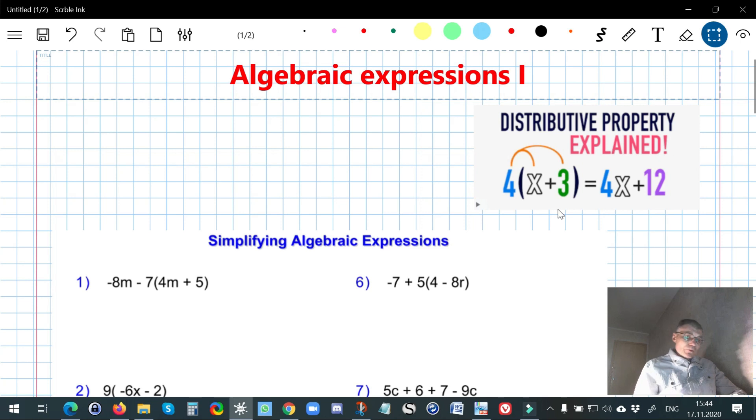We know from low grades how distributive property works with numbers. For example, if we have to calculate this, we might first perform the addition in parentheses, and it's obviously 10, and then multiply it by 2.